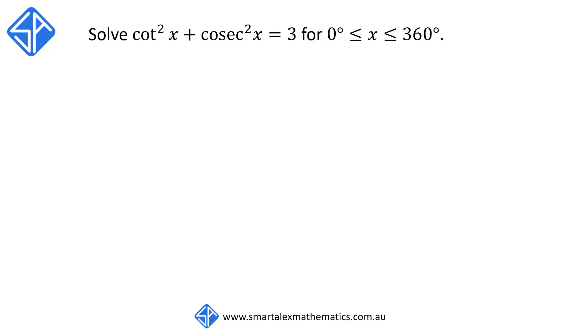In this example we're going to be solving the trigonometric equation cot squared x plus cosec squared x is equal to 3 for x between 0 degrees and 360 degrees.